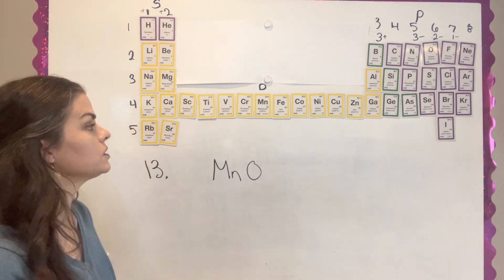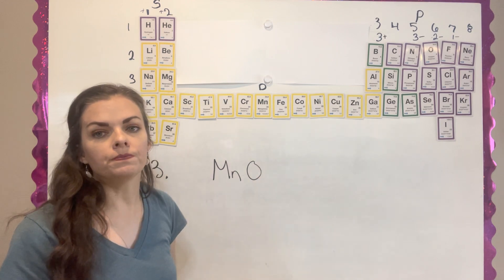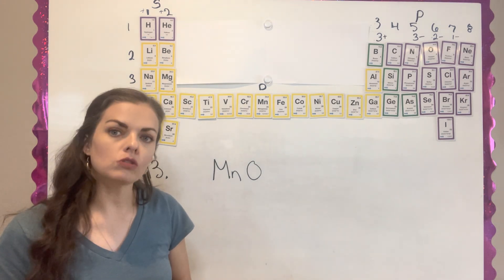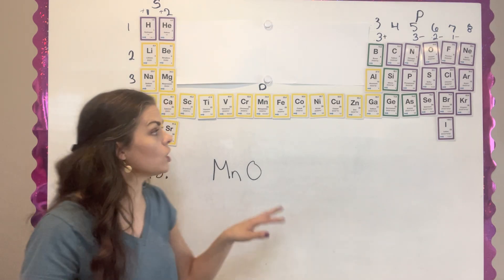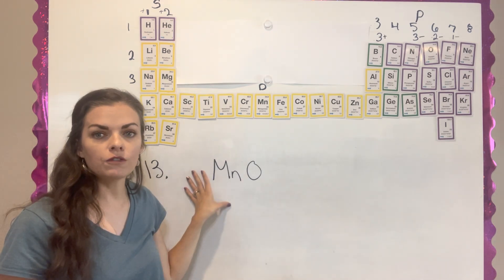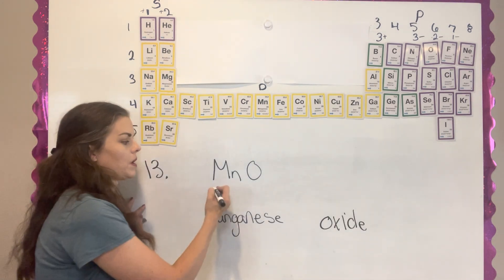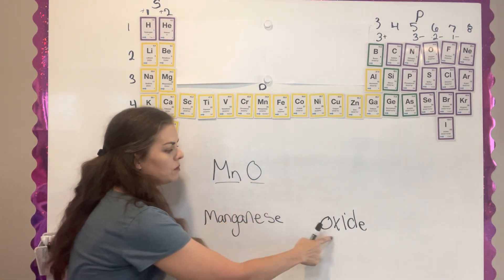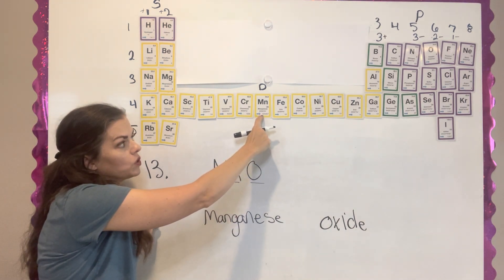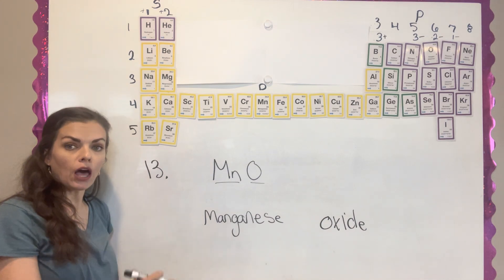Question thirteen addresses transition metals. These metals in the middle of the periodic table can change their charge — they can change the amount of electrons they give away. They're still metals giving away electrons, but the amount can change, so we don't just put a number above them — you have to figure it out. For question thirteen, they give you the compound and ask you to name it. Normally you name the metal, then the non-metal with -ide, but when dealing with a transition element, you have to add a separate rule because the charge changes — you have to tell what the charge is.